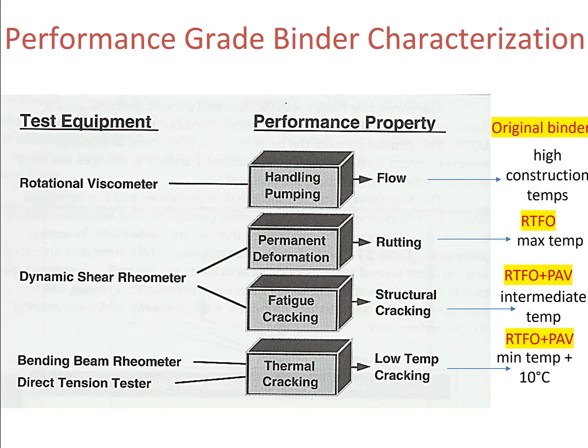Before we perform this test to check rutting potential, the sample needs to go through the short-term aging process, so we need to perform the rolling thin film oven test. And if we use this test to check the fatigue potential, the sample needs to go through both short-term and long-term aging, so we need to perform the rolling thin film oven test and the pressure aging vessel test prior to testing. Also, rutting often happens at high temperatures, so this test is performed at maximum temperature to check rutting potential and at intermediate temperature to check fatigue potential.